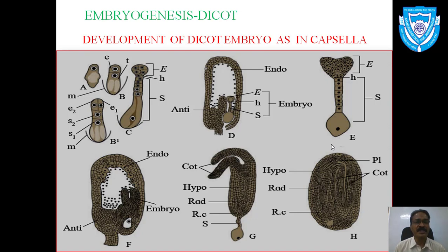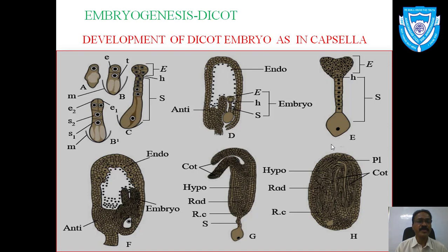As the zygote is developed, it undergoes mitotic divisions, and many changes take place. The zygote first divides into two cells: the lower cell, which is toward the micropylar end of the ovule, and the upper cell, which is toward the chalazal end.